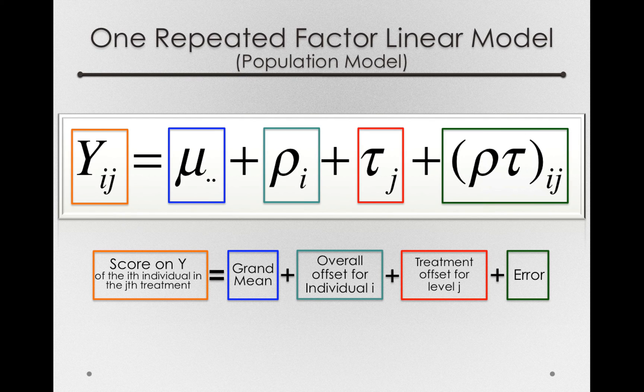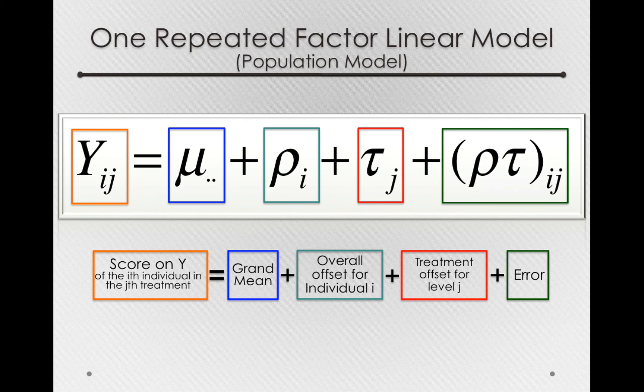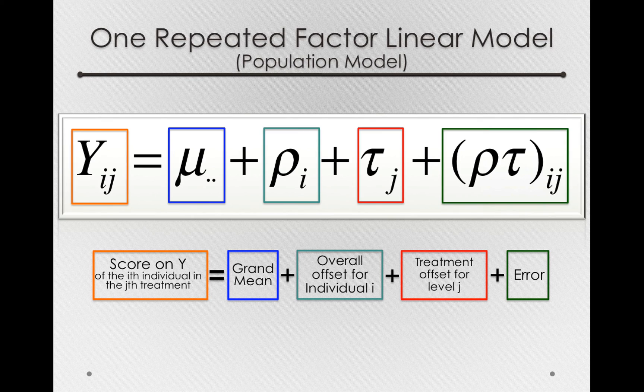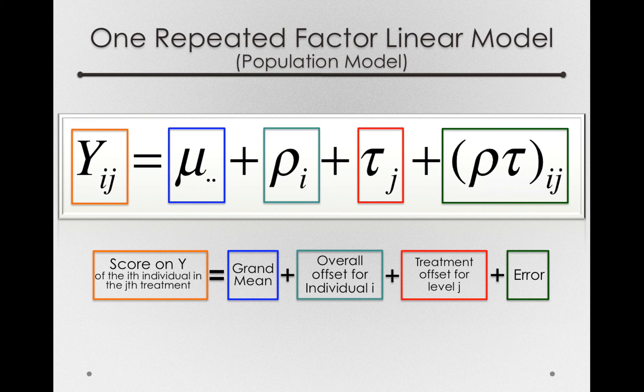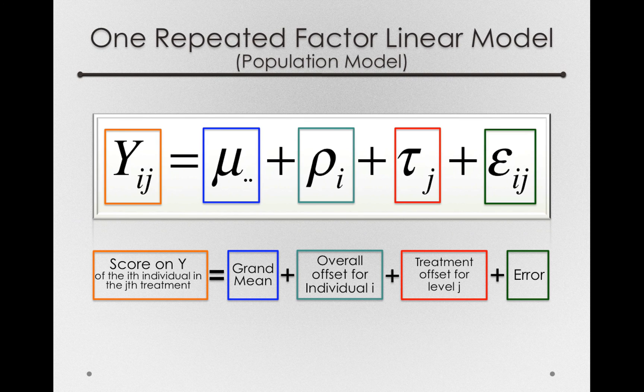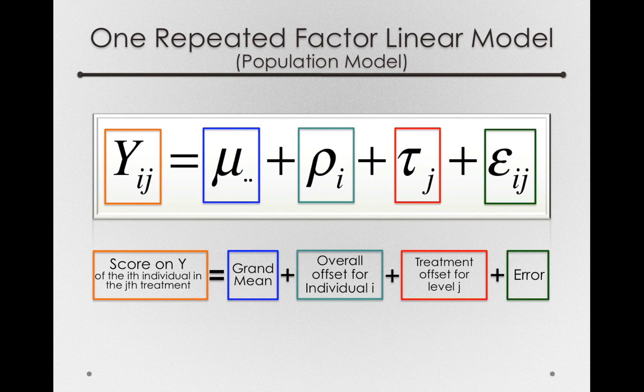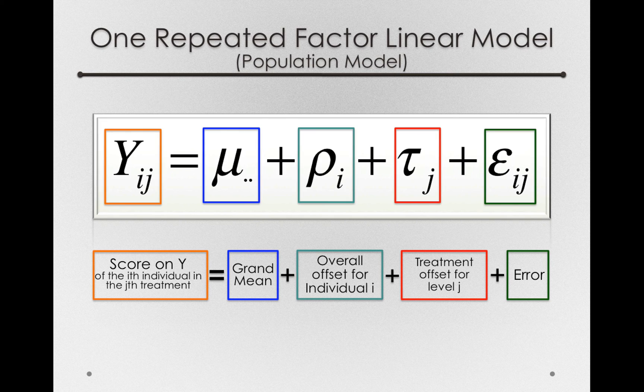So, to the degree that the interaction between the ρ's and τ's is small, that's evidence for stability. If you think about it, if everybody had the exact same response to some treatment, then the interaction between ρ's and τ's, the interaction between subjects and treatments, would be zero. So, this interaction term is actually the error in this model. It will be our benchmark for how stable the effect is of whatever treatments we're applying.